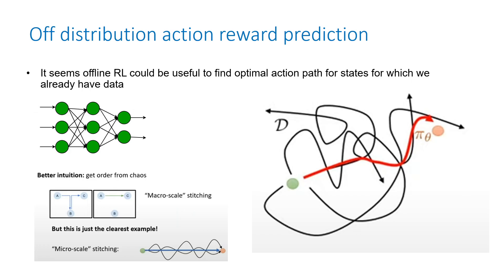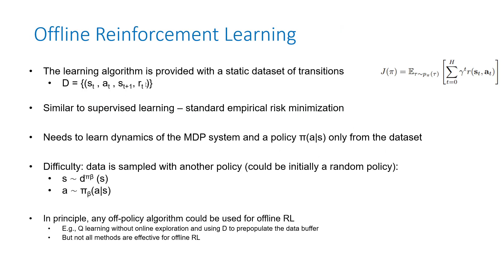You get a dataset where each point is a state, action, next state, and reward — similar to supervised learning in principle. Any off-policy algorithm could be used for offline RL, but not all are effective. You have to balance getting the maximum reward while not straying too far from the collected data, otherwise you'd be making nonsensical predictions.